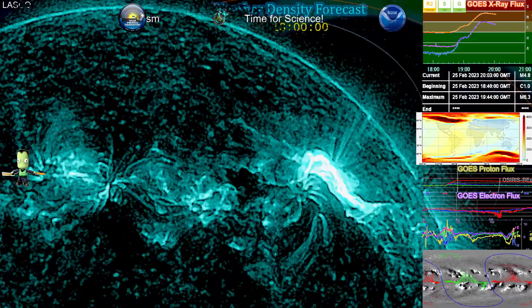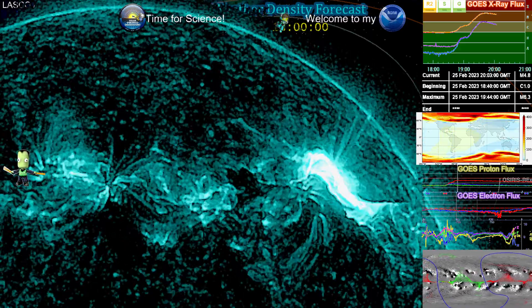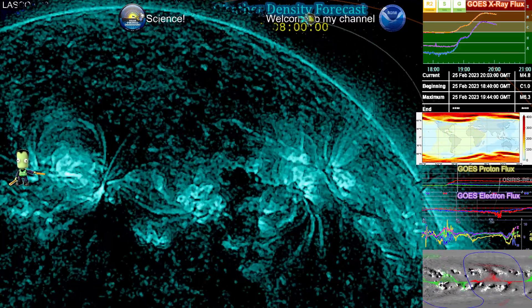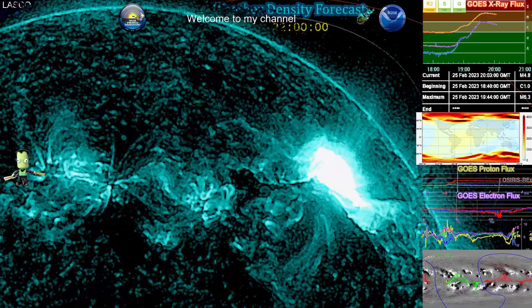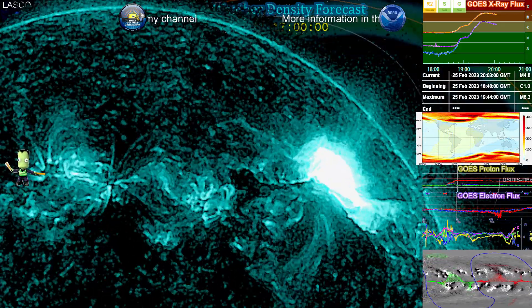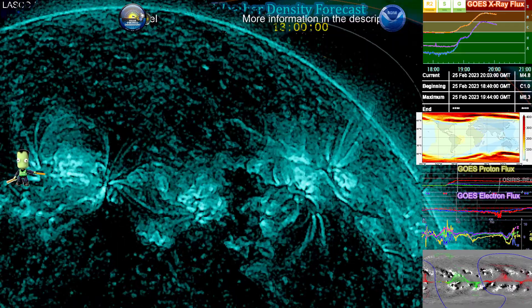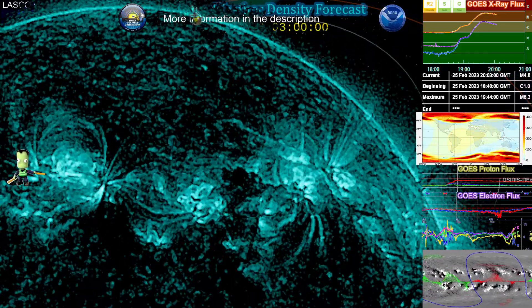But this event does not stop there. It is reaching across to Region 3235, which is to the direct left of that, or east, and that is in the center. Then slightly left of that is Region 3234, which is now showing signs of being destabilized by the event. So this is reaching across three regions.